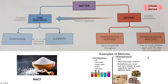In a heterogeneous mixture, there are two or more phases, each with its own set of properties. For example, a fruit salad has two or more phases and we can separate it using physical means.